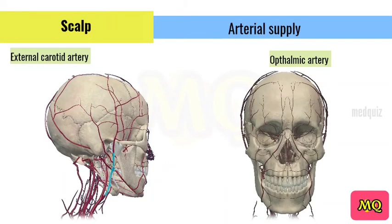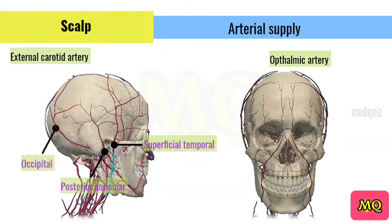The ophthalmic artery is a branch of the internal carotid artery. There are three branches of the external carotid artery involved: superficial temporal, posterior auricular, and occipital. The superficial temporal supplies the frontal and temporal regions, the posterior auricular supplies the area superiorly and posteriorly to the auricle, and the occipital supplies the back of the skull.